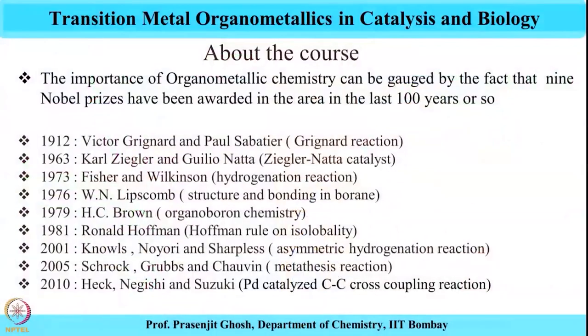Then in 1979, H. C. Brown received the Nobel Prize for developing organoboron reagents, which have many applications in reduction chemistry, particularly borohydrides. We would also see that a second Nobel Prize was an offshoot of this discovery — the palladium-mediated cross-coupling reaction for which H. C. Suzuki and Negishi were given the Nobel Prize.